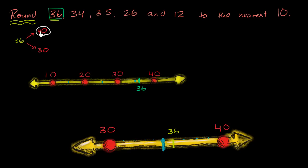This is literally called rounding up. Now let's try some of these other numbers. What about 34? Well, 34 is right over here on this number line. And on the zoomed-in number line, 34 is right over here.